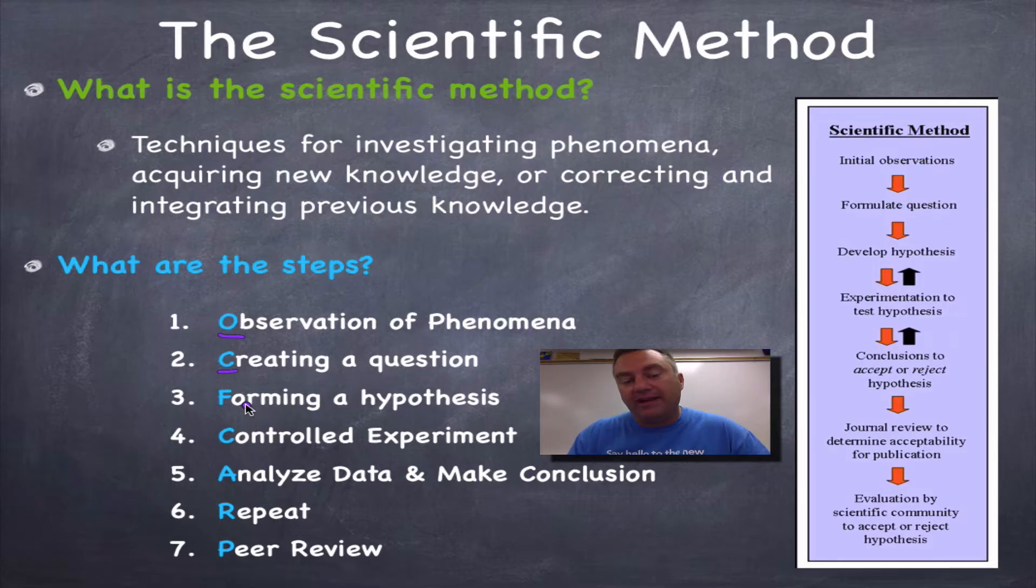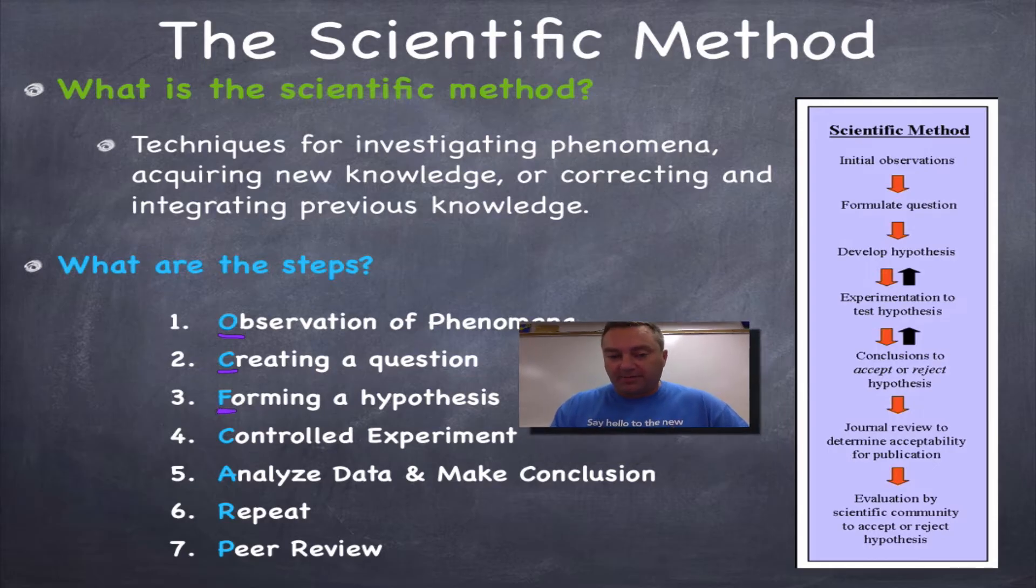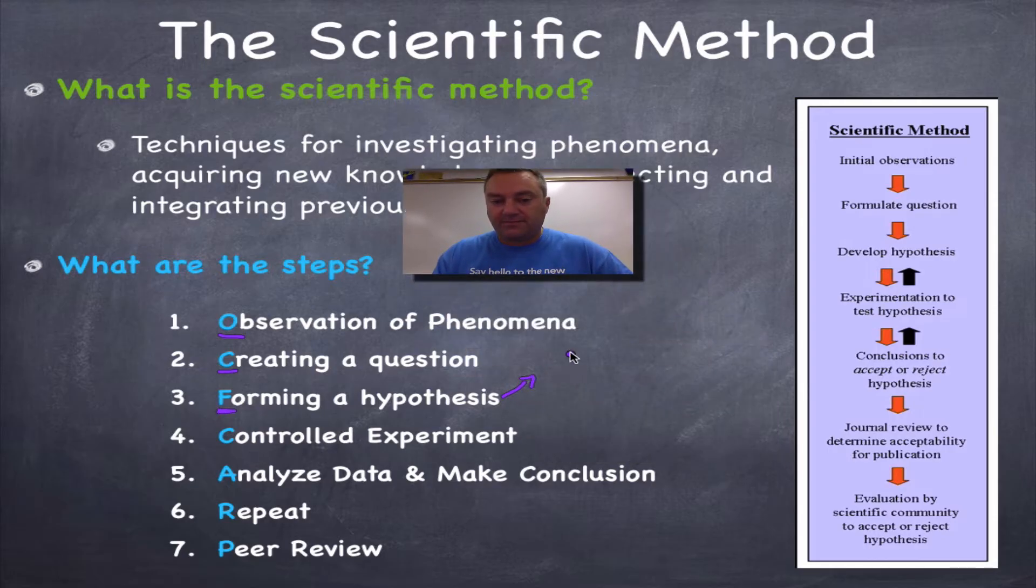C, creating a question. Remember, every good scientist is very curious. They're like, huh, why did that happen? So once you come up with a question, then you need to come up with a possible answer. And a possible answer is called a hypothesis. So the F is forming a hypothesis. Remember, hypothesis is written as an if-then statement, and if you want to add the because, that's fine too. If this happens, then that will happen.